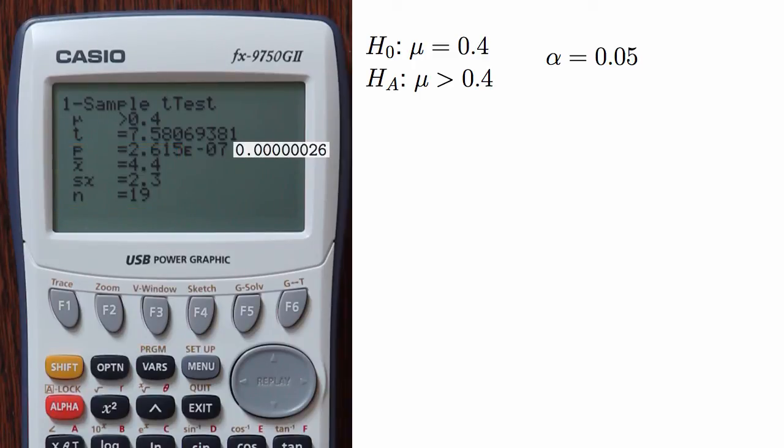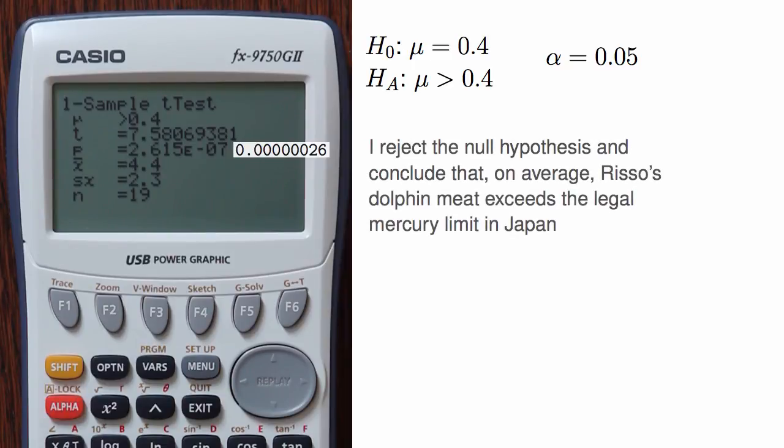I use the p-value to evaluate the hypothesis test. Since the p-value is smaller than the significance level alpha, I reject the null hypothesis and conclude that, on average, Risso's dolphin meat exceeds the legal mercury limit in Japan, which is consistent with our confidence interval from earlier.